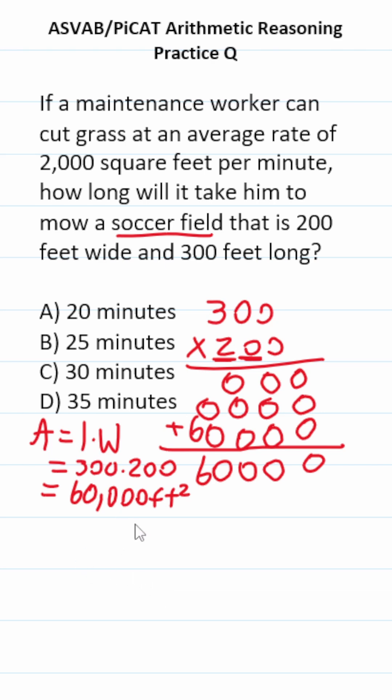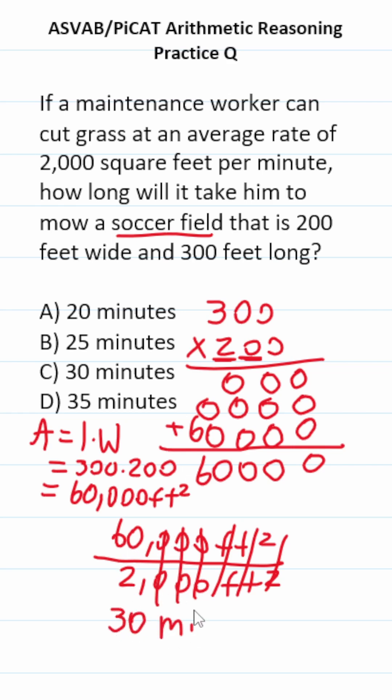All right, so to figure out how long this is going to take, we're going to take his 60,000 square feet that he has to mow, and we're going to divide that by the rate at which he can mow, which is 2,000 square feet per minute, according to the problem. Cross out these units. Cross out these corresponding zeros. 60 divided by 2 is 30. So it's going to take him 30 minutes. Answer choice C to mow this soccer field.